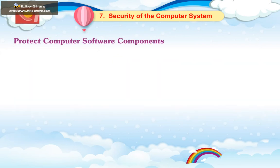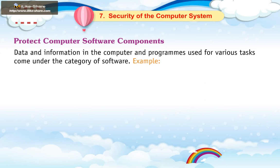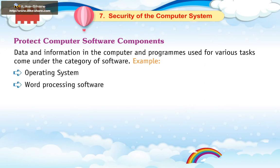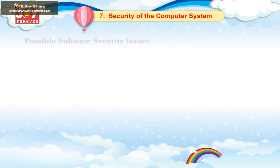Protecting Software Components: Data and information in the computer and programs used for various tasks come under the category of software. Examples include: operating system, word processing software, files containing documents, and files containing pictures and images.